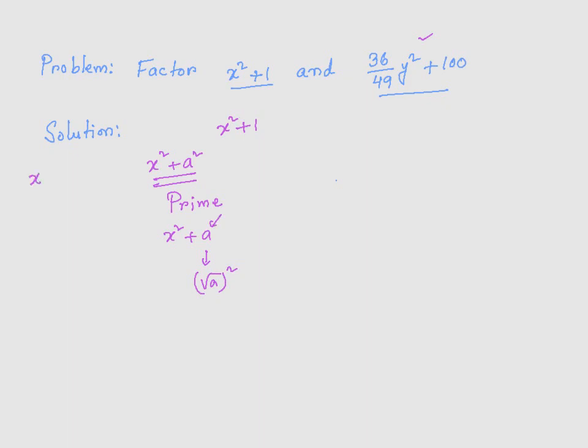However, if you have something of this form, x squared minus a squared, this is a difference of squares you can factor it. So anytime you see something square plus something, you cannot factor it, and it is going to be prime, remember.